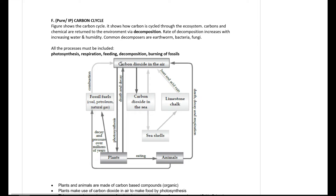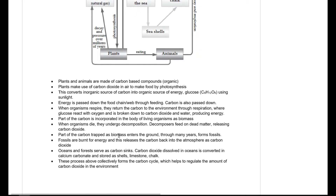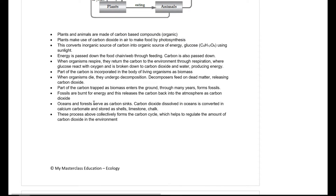Plants also undergo death and decay, releasing carbon dioxide into the air. Be mindful of all these processes when you sketch the cycle. Carbon is very important because almost all major macromolecules contain it — carbohydrates, proteins, and fats from your nutrition topic all contain carbon. Essentially, living organisms are made out of carbon.